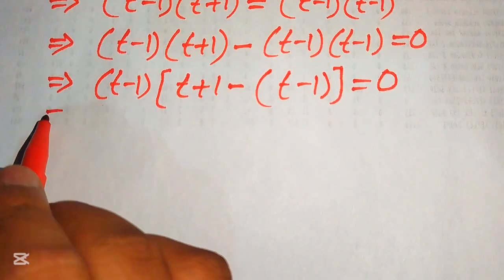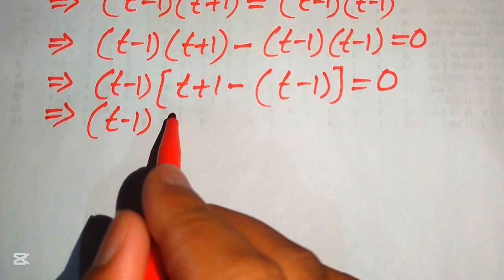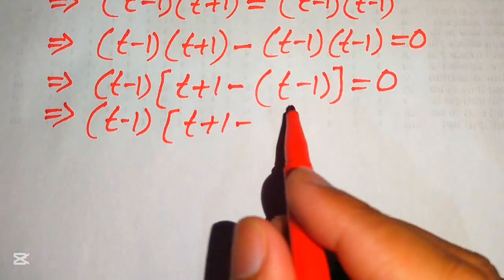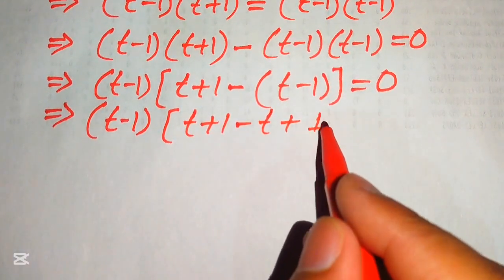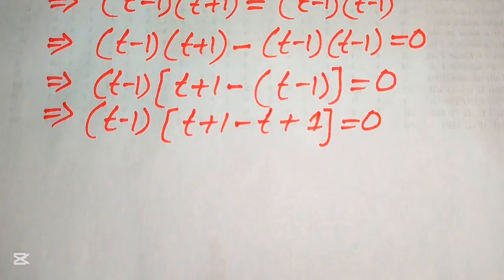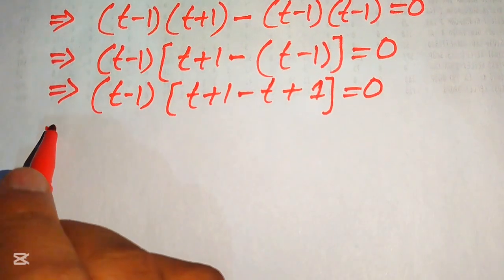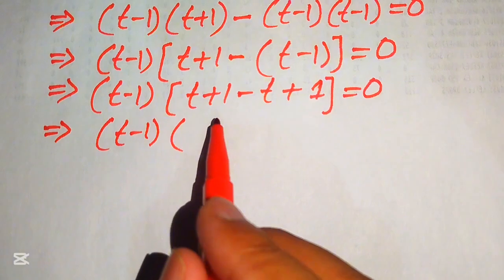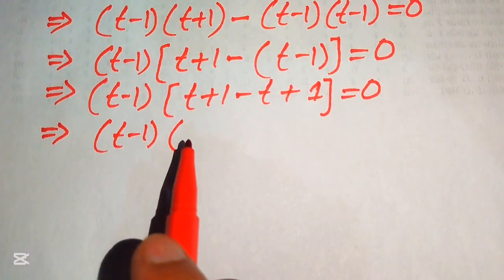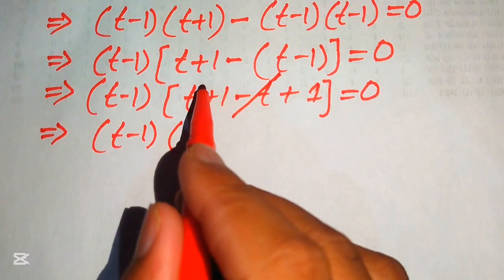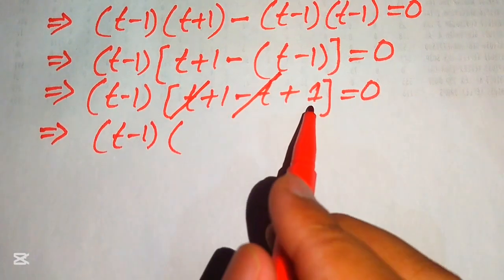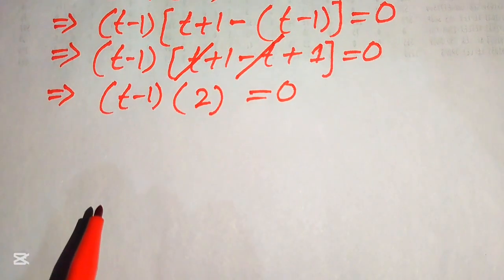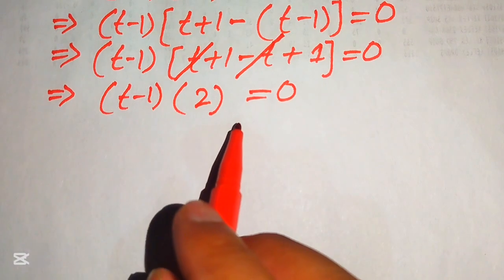In the next step we simplify by combining like terms. The negative t and positive t cancel out, and 1 plus 1 equals 2, so we get t minus 1 times 2 equals zero.